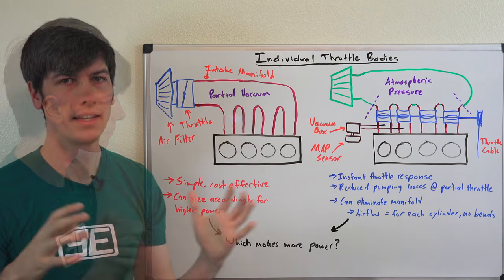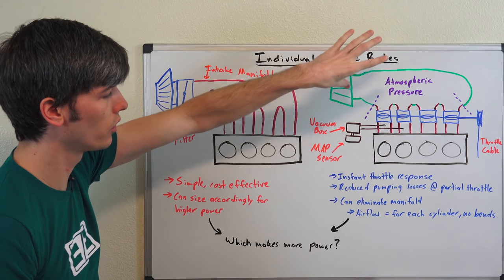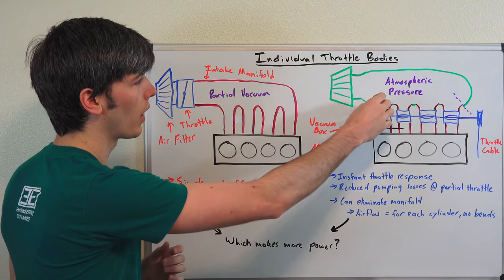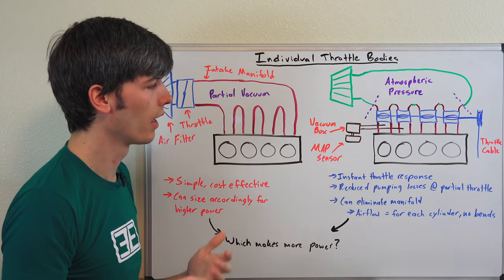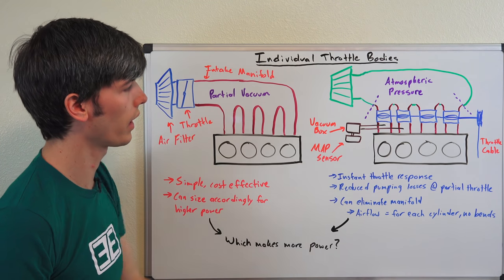Now again as I mentioned you can remove this intake manifold here and in doing that you can improve the airflow for each of these cylinders. So you can make it easier, obviously there's no restriction coming in, so that can be a horsepower benefit. You don't have those bends winding through that air intake if you eliminate this whole system. So from an efficiency standpoint it does make sense.